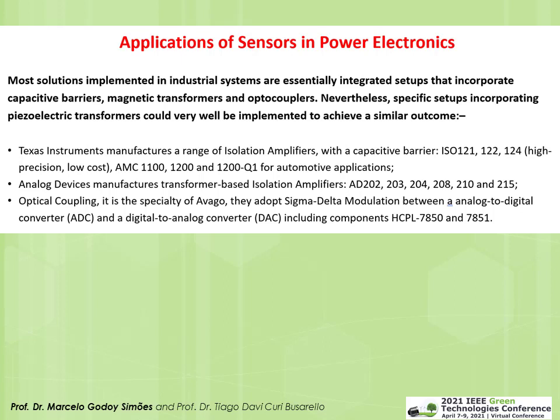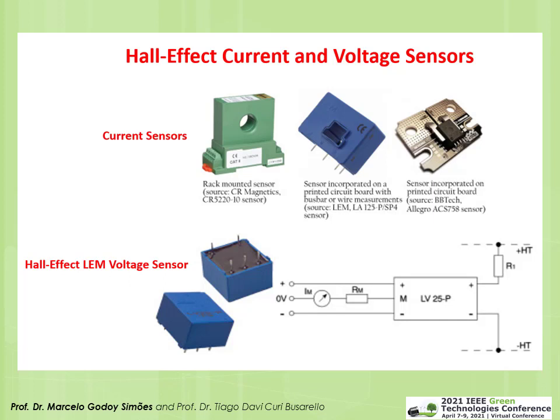Texas Instruments manufactures isolation amplifiers such as the ISO121 and ISO122, which provide a capacitive barrier. Analog Devices also makes isolation amplifiers based on transformers with a carrier — providing galvanic isolation. Optocouplers can break the ground between two sides of a circuit; some include sigma-delta modulation for analog-to-digital conversion, such as the ACPL-7850 and ACPL-7851.